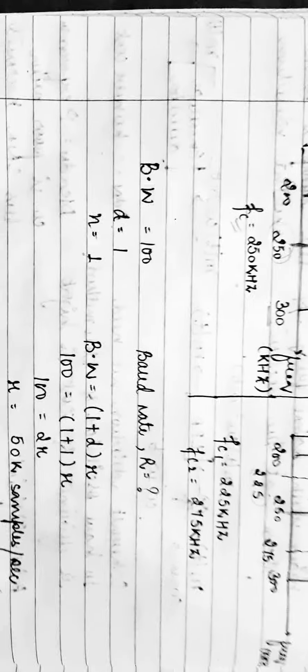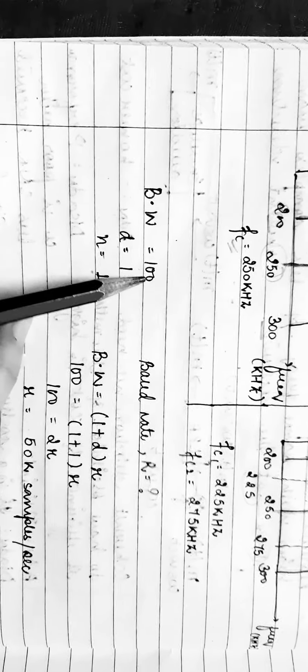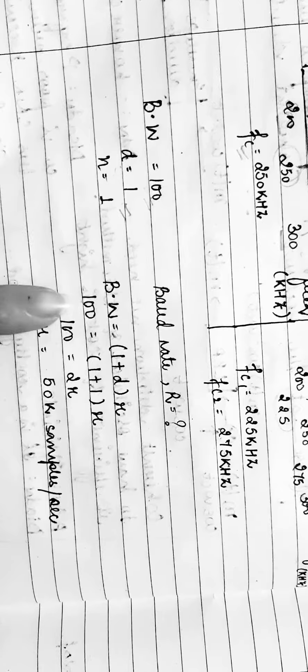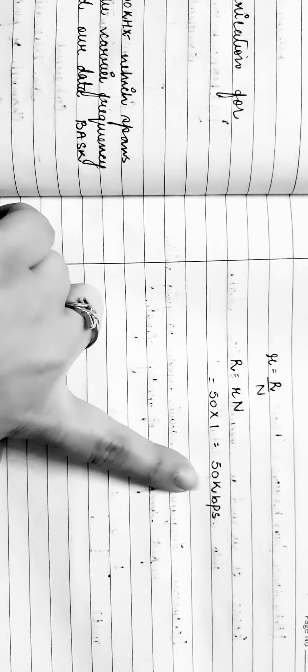The bandwidth is 100 kilohertz, and D is 1 for binary ASK. We can calculate the baud rate using the formula: bandwidth equals (1 + D) into r. With bandwidth = 100 and D = 1, we calculate r = 50 kilohertz samples per second. The baud rate, small r, equals capital R divided by N. With N = 1, the baud rate is 50 KBPS.